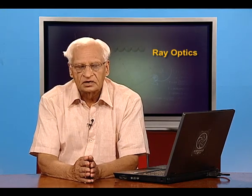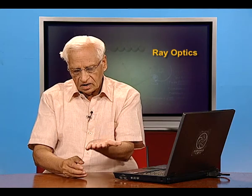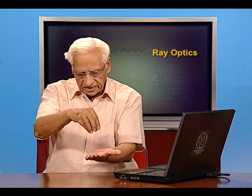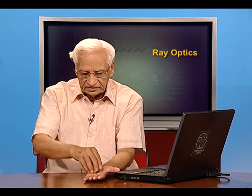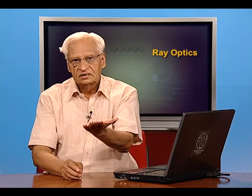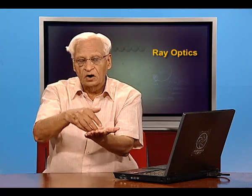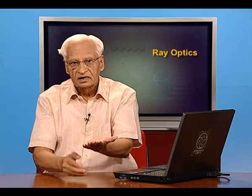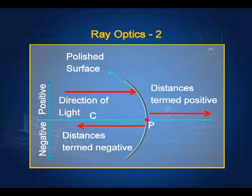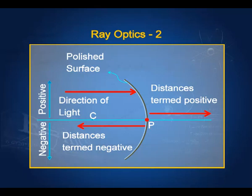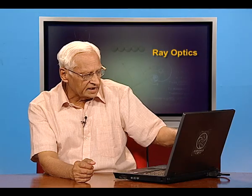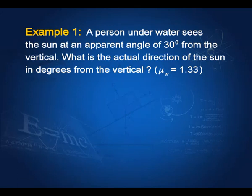Towards the end of the last lecture, we found that if an object is placed under water, its apparent depth — the depth at which we see it from outside — is smaller than its actual depth. Now, Example 1: a person under water sees the sun at an apparent angle of 30 degrees from the vertical. What is the actual direction of the sun in degrees from the vertical?